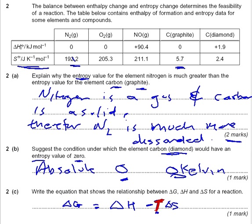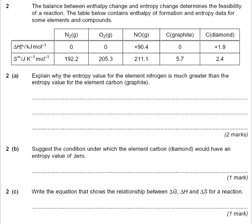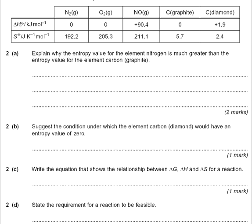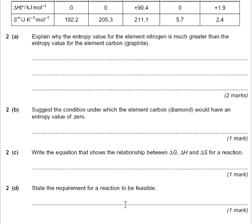Okay, there you have it — the equation showing the relationship between delta G, delta H, and delta S. You can have different variations of it however you've remembered it. Looking at 2D, it states the requirement for a reaction to be feasible. What we're looking for is when we calculate delta G, it's got to be less than or equal to zero. You can either write it as delta G ≤ 0, or write it in words. And that is question 2.